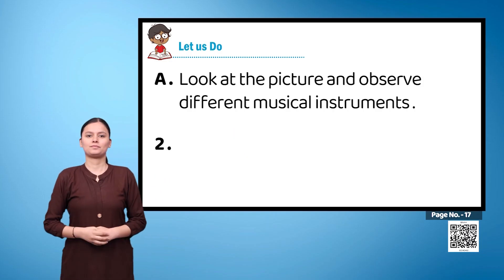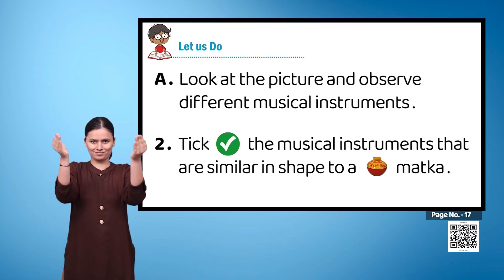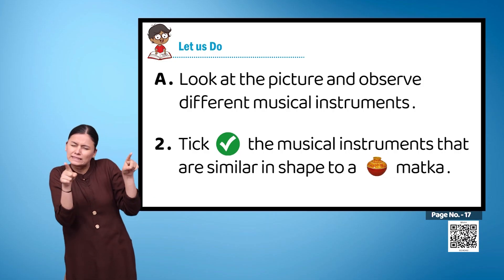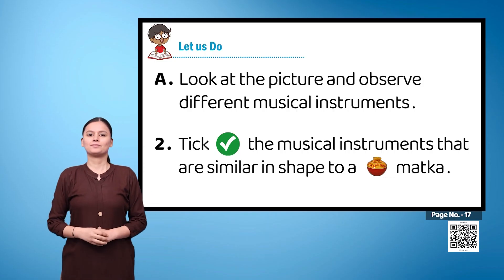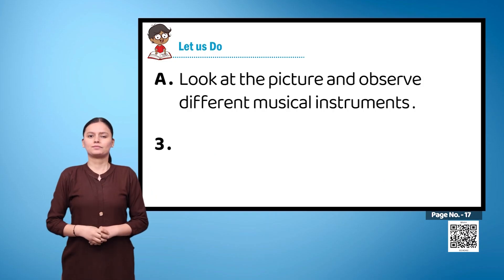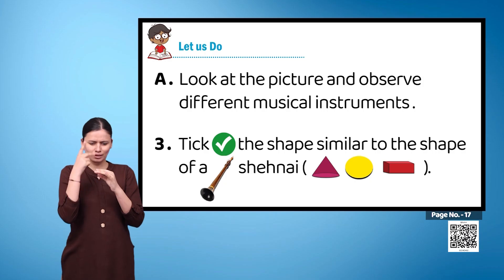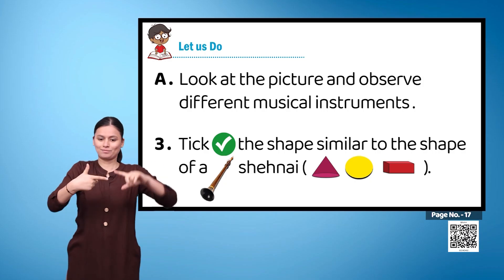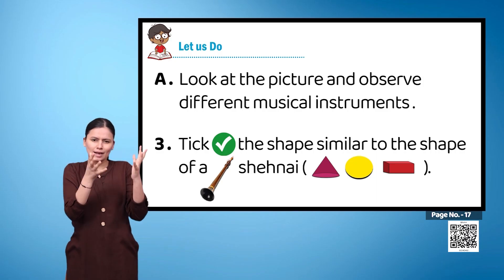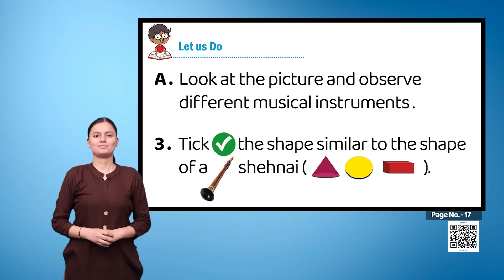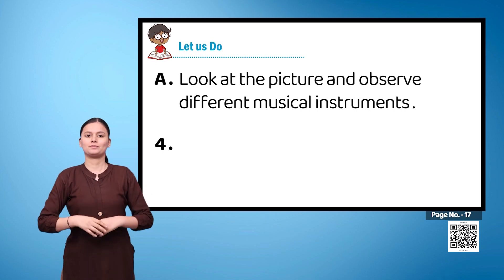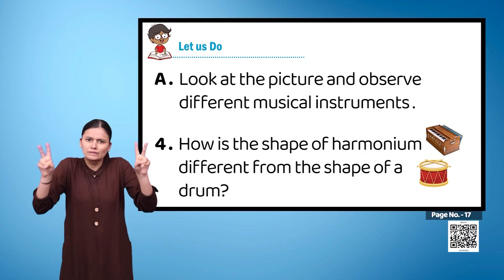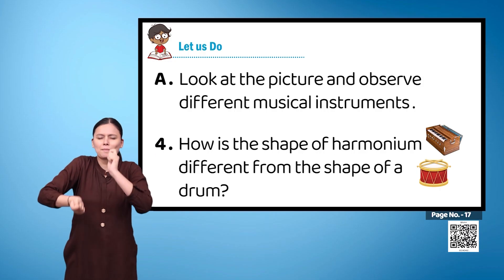Question 2: Take the musical instruments that are similar in shape to a matka. Question 3: Take the shape similar to the shape of a Shehnai. Question 4: How is the shape of a harmonium different from the shape of a drum?